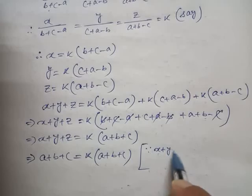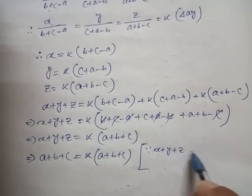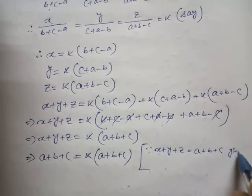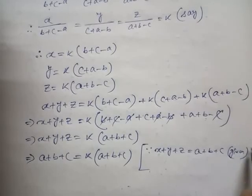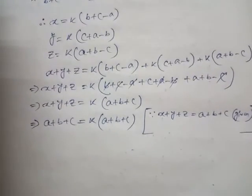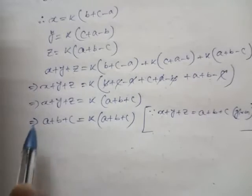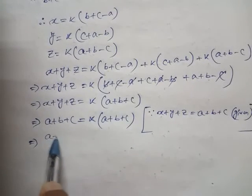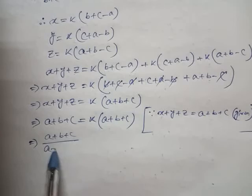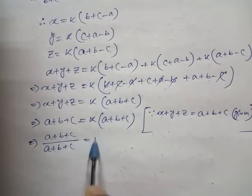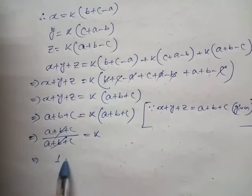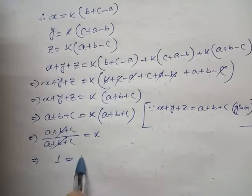Since x plus y plus z equal to a plus b plus c is given, we get: (a plus b plus c) by (a plus b plus c) equal to k. Cancelling these two, then 1 equal to k.